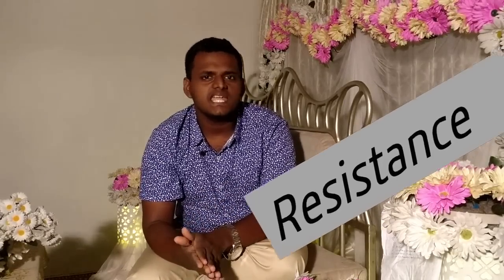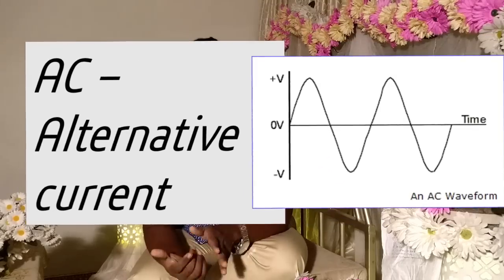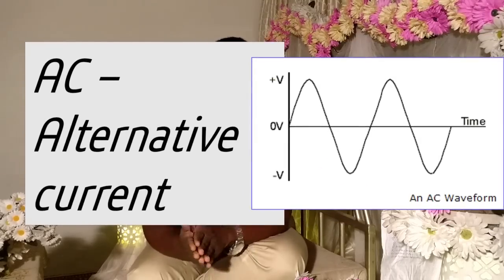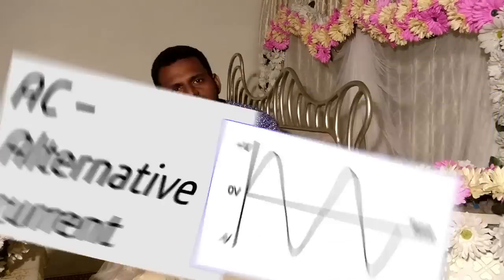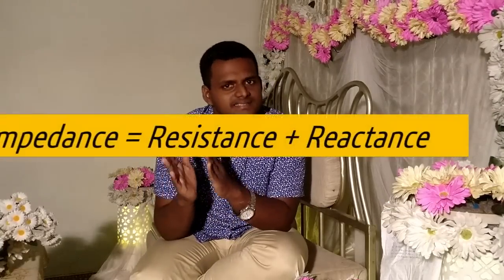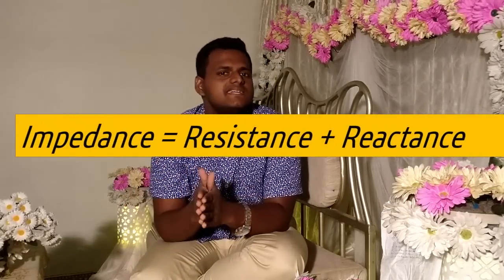We can think of this in terms of DC voltage and AC voltage. We can express impedance as resistance plus reactance.